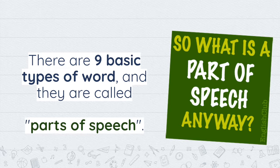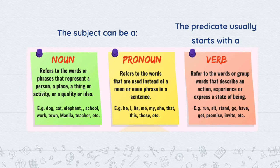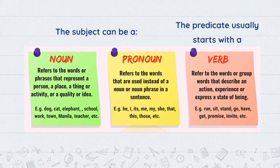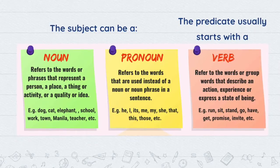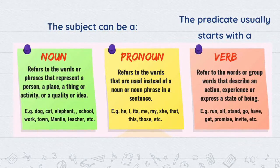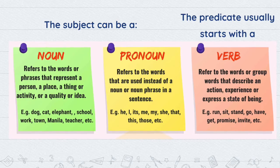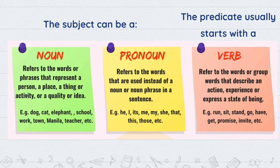We also talked about the different parts of speech. We learned that every single word in English has a job, and there are nine different jobs — so all the words we know fall into a different category with different names. We learned three different parts of speech so far: the subject of a sentence can either be a noun, which is a word that refers to a person, a place, or a thing, or a pronoun, which is a word that takes the place of a noun. We also learned that the predicate usually starts with a verb, and a verb is an action word.